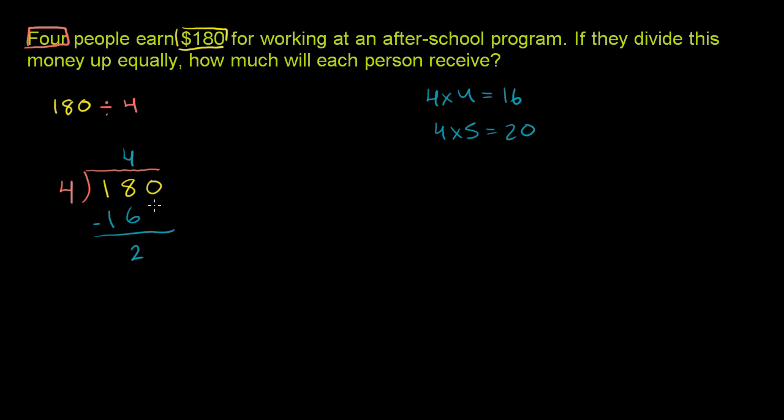Now we want to bring down this 0. Because we really said 4 goes into 180 forty times, because it's in the tens place. 40 times 4 is 160. 180 minus 160 is 20. That's why we bring down the 0.